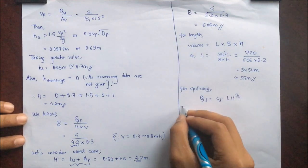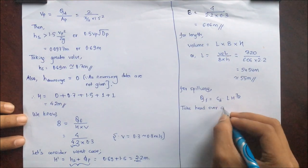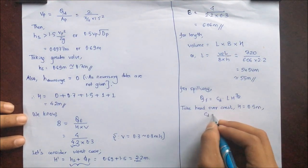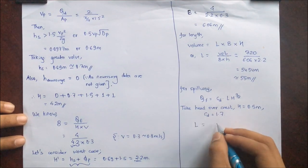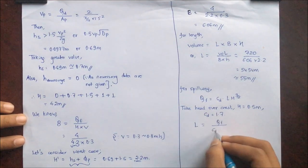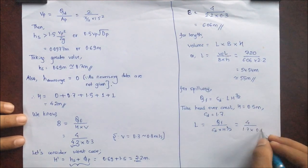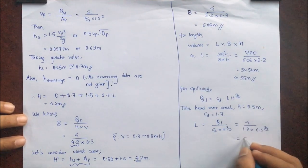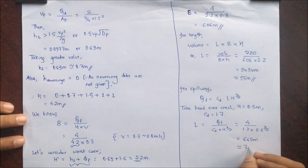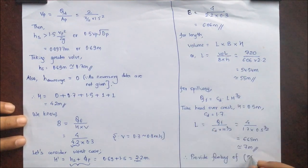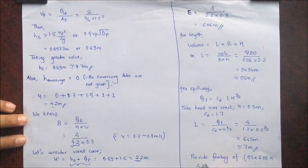Taking head over crest as 0.5 meter (not specified) and Cd = 1.7, then Ls = Qf / (Cd × H^(3/2)). Substituting values, Ls = 6.65 meter, approximately taken as 7 meter. The final forebay dimensions are 55 × 6.06 × 4.2 meter, and the spillway length is 7 meter. Make sure the spillway length is less than the forebay length — this can be clearly observed here.